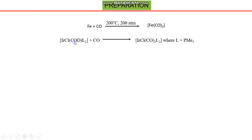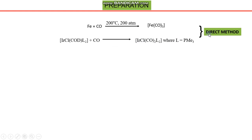Another reaction involves iridium chloride with COD and L₂ — COD is cyclooctadiene. Carbon monoxide is passed through this complex, and the carbonyl complex is obtained. L is a trimethylphosphine ligand. A powder or suspension of this complex in an appropriate solvent is subjected to carbon monoxide, and the reaction affords the metal carbonyl complex product.